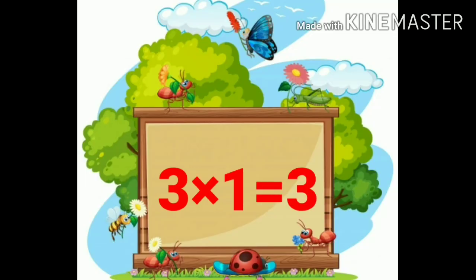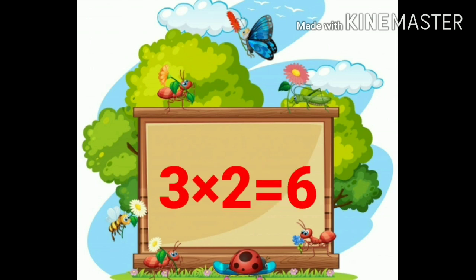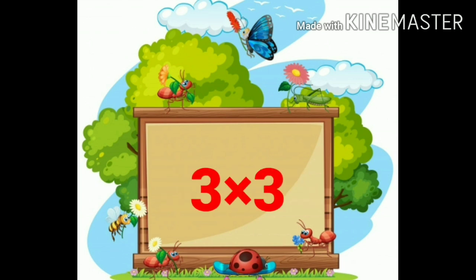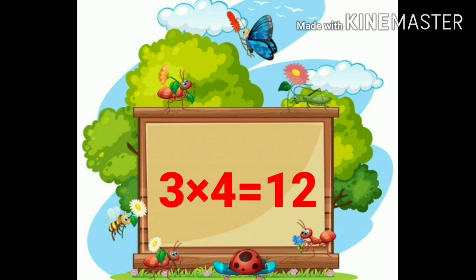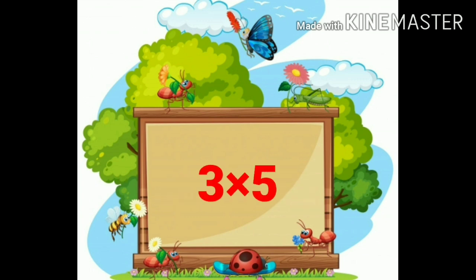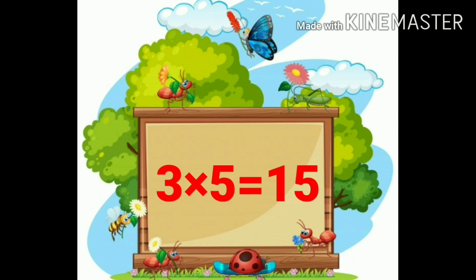Three ones are three. Three twos are six. Three threes are nine. Three fours are twelve. Three fives are fifteen.